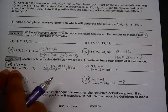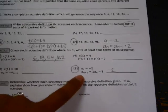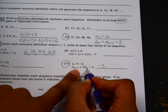Here, t(n) is the current term, t(n-1) is the term before it. Here, if a sub n+1 is the current term, a sub n is the one before it.